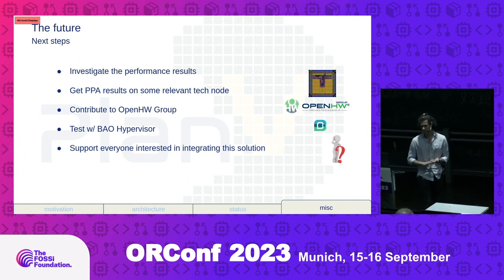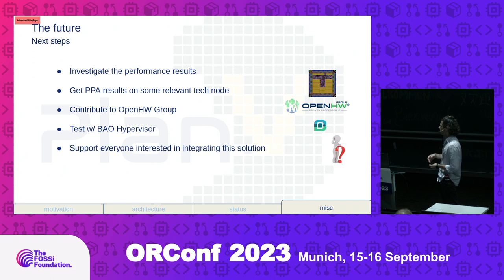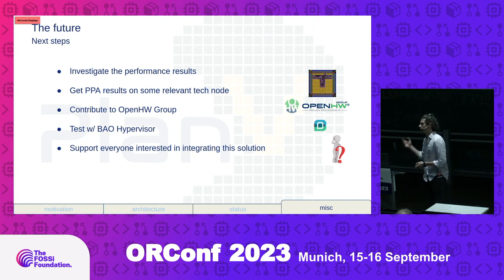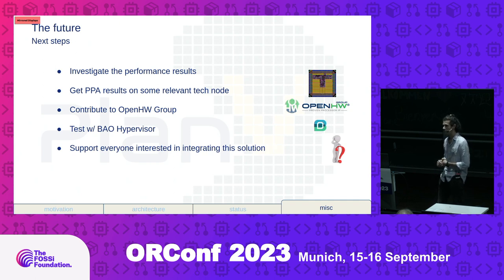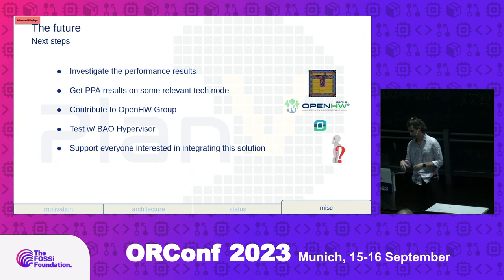In terms of next steps, we want to solve the current performance problem. It would be very interesting to get results for power and performance on a relevant technology node. We will be glad to contribute to the open hardware group. We started discussing with the Bao team — they would like to test and run their hypervisor on this platform. And of course, we are willing to support anyone interested in integrating this solution in their project.